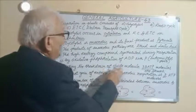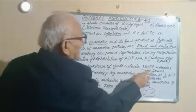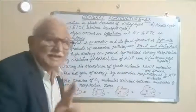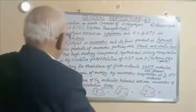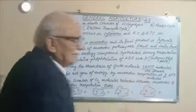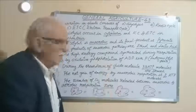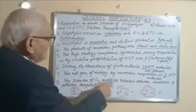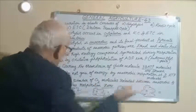During the breakdown of glucose molecules, 38 ATP molecules are formed. The net gain of energy by anaerobic respiration is two ATP molecules.